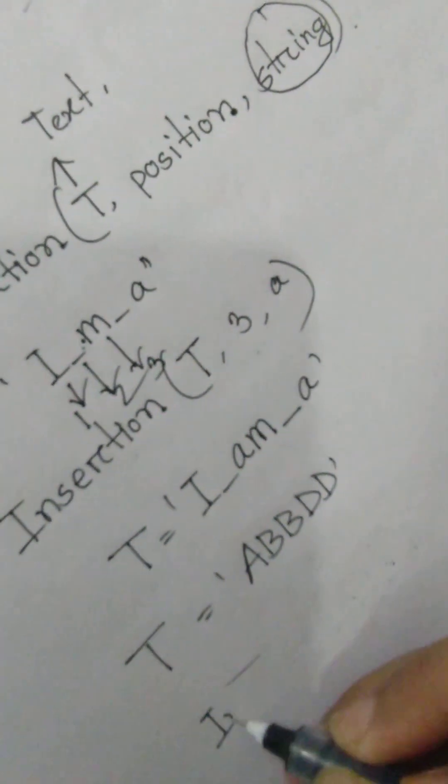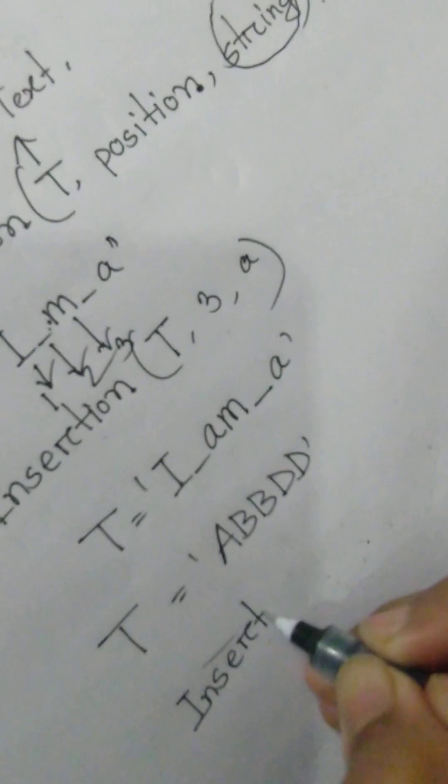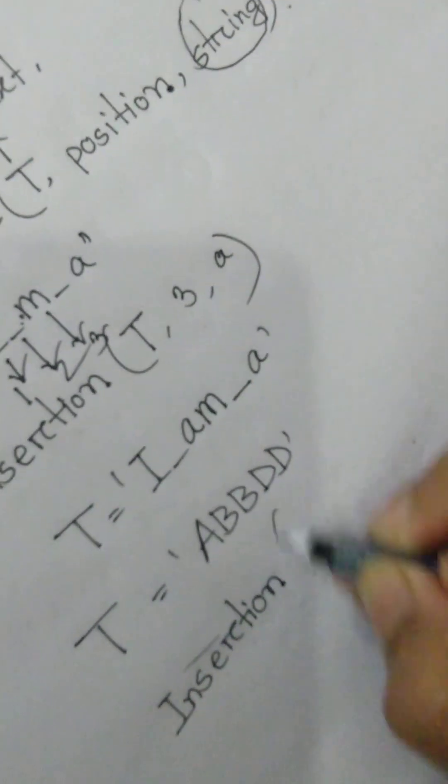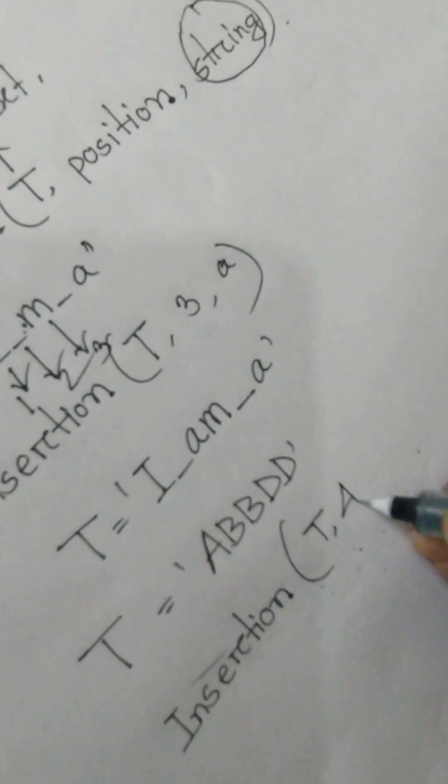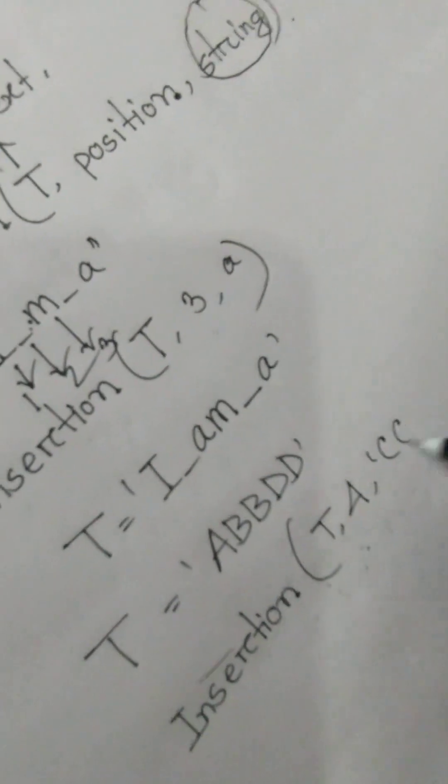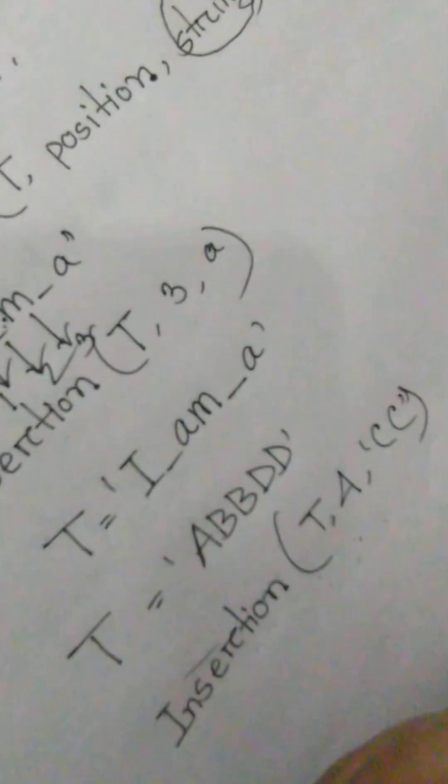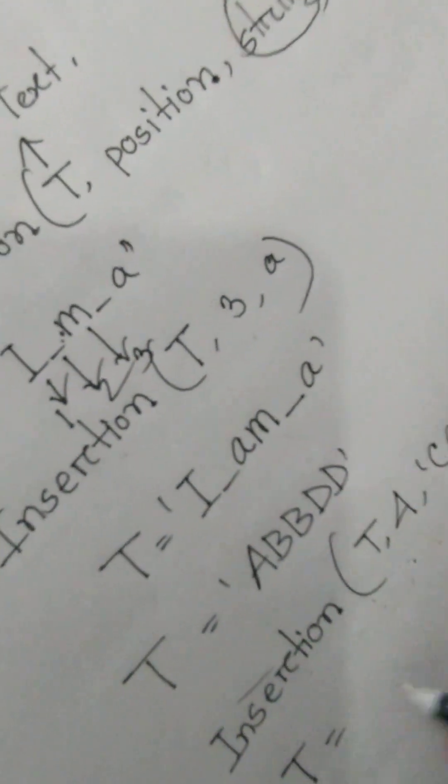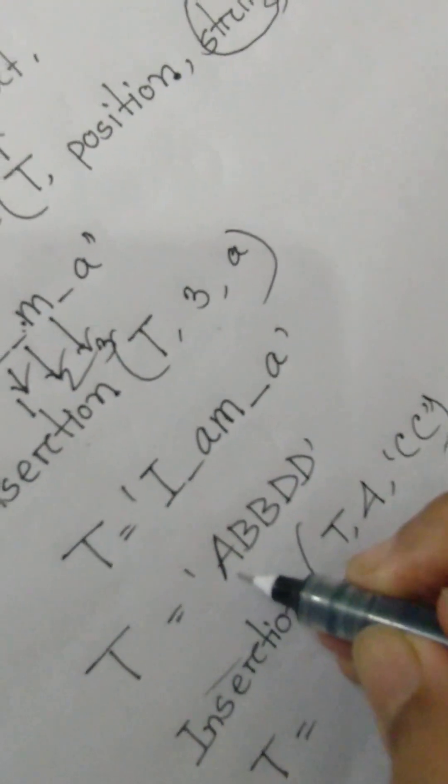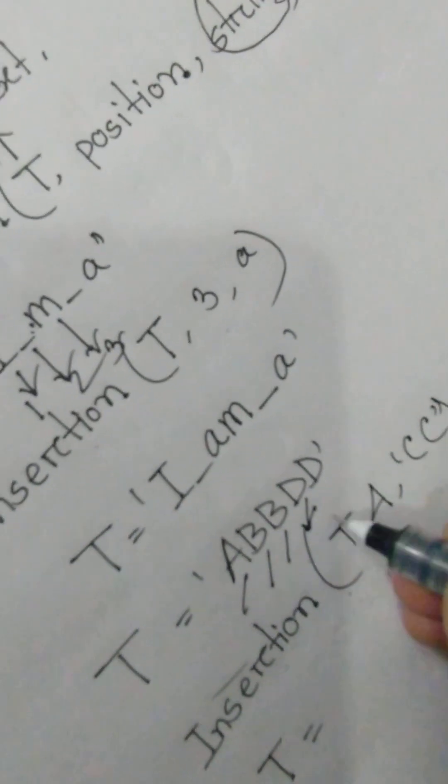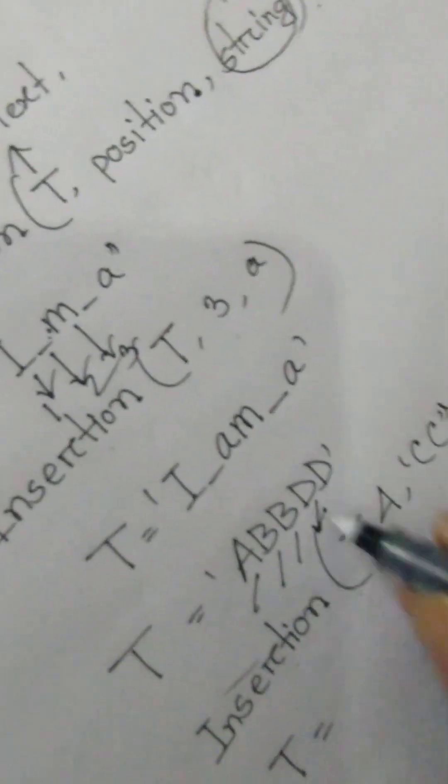B D D. Insertion will be T, 4, C C. So T equals to one, two, three, four. In that position we will add A B B C C then D D.